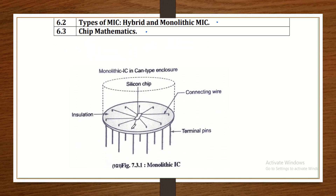Monolithic IC: 'Mono' means one. It is a single IC. It has terminal pins, connecting wires, and a silicon chip — everything is on a single IC. That's why it is known as monolithic.